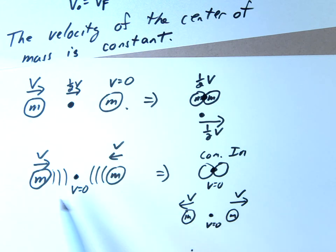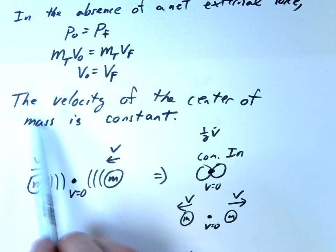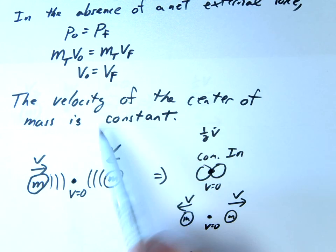Now this works with no matter what the masses are. The key idea is that our velocity of the center of mass is going to be constant regardless.